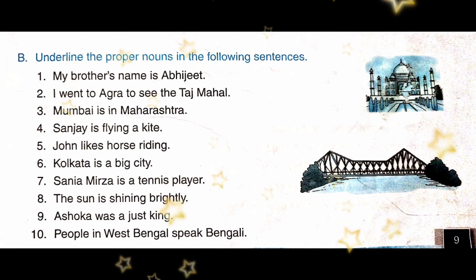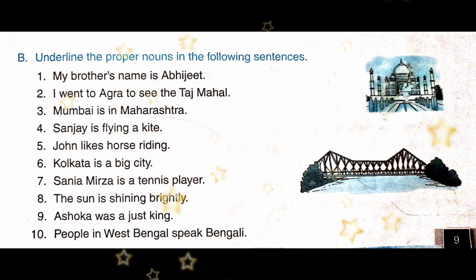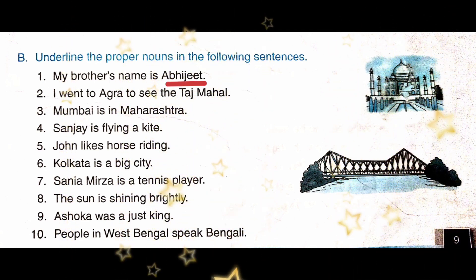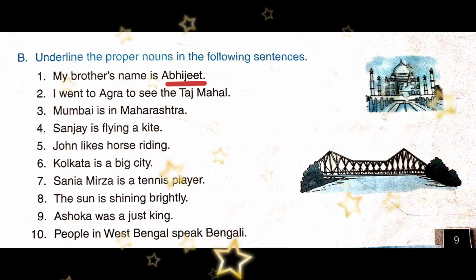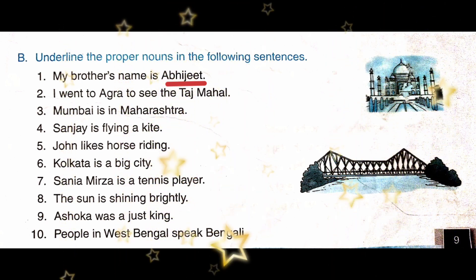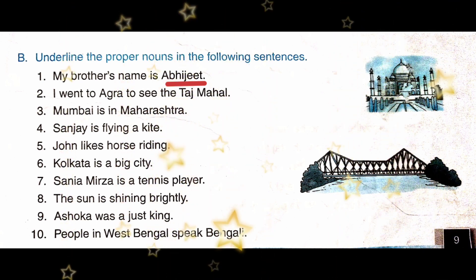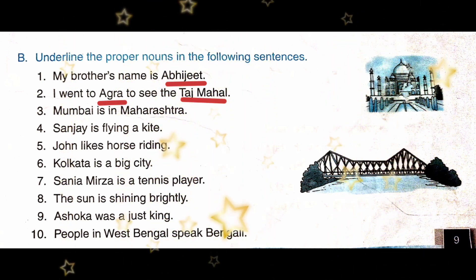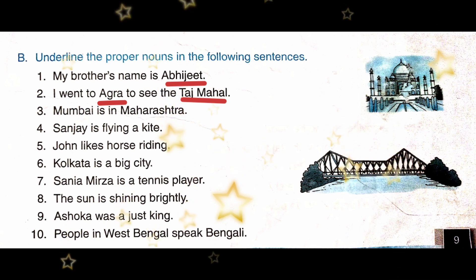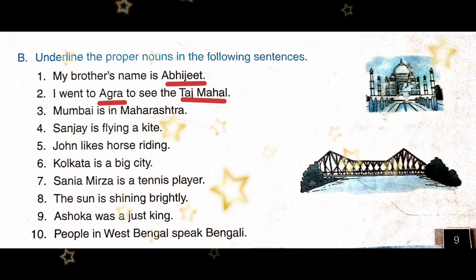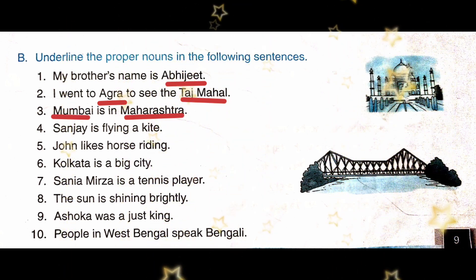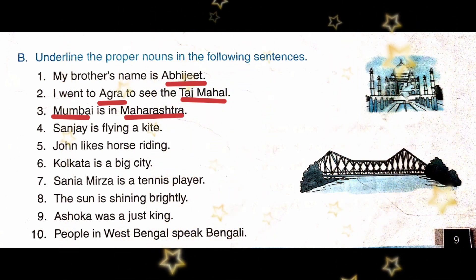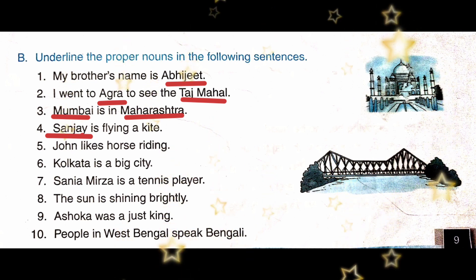Here we start with the first question. 'My brother's name is Abhijit.' Here, Abhijit is a proper noun. Second: 'I went to Agra to see the Taj Mahal.' Here, Taj Mahal and Agra are both proper nouns. 'Mumbai is in Maharashtra.' Both Mumbai and Maharashtra are proper nouns. 'Sanjay is flying a kite.' Sanjay is a proper noun.